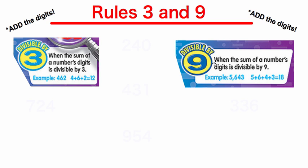The rule for 9 is just the same — we add the sum of the number's digits and see if it's divisible by 9. Here we have the number 5,643. 5 plus 6 plus 4 plus 3 is 18. 9 can evenly go into 18 — it goes in two times. So 5,643 is divisible by 9.